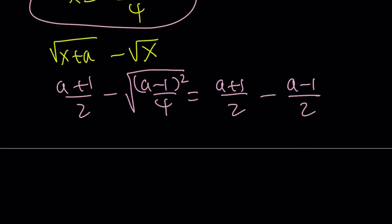a plus 1 over 2 minus the square root of a minus 1 squared divided by 4. But that can be simplified. Of course, we need special conditions here. Suppose they're satisfied and we got the following. Now this can be easily simplified. Don't you think? Just subtract the numerators. a plus 1 minus a plus 1 divided by 2. a cancels out.